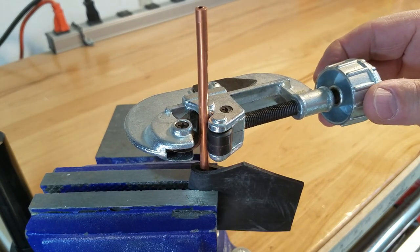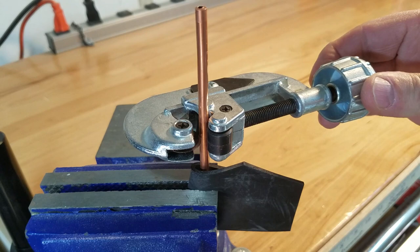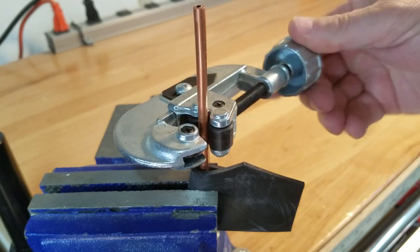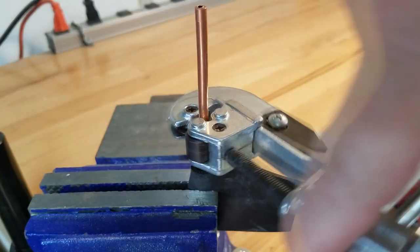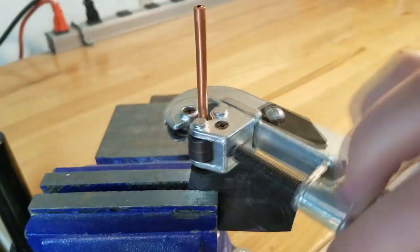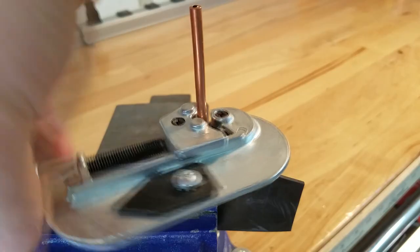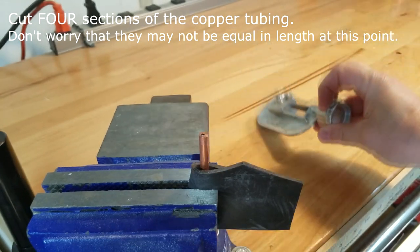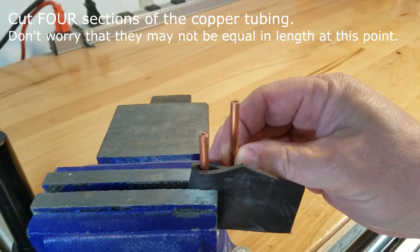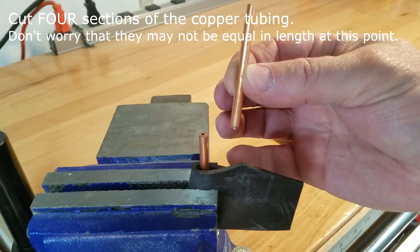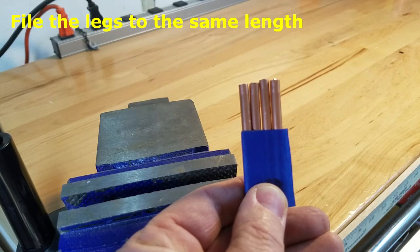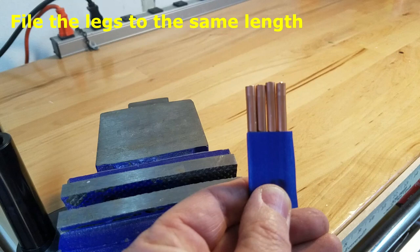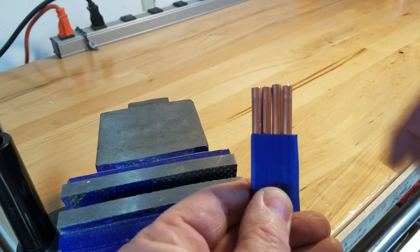I've placed my pipe cutter right on that mark. As I go around, I continually tighten it. Keep tightening and I'm getting there. I can feel the pipe is almost cut through. There we go. Do that for the rest of the three legs so you'll have a total of four.